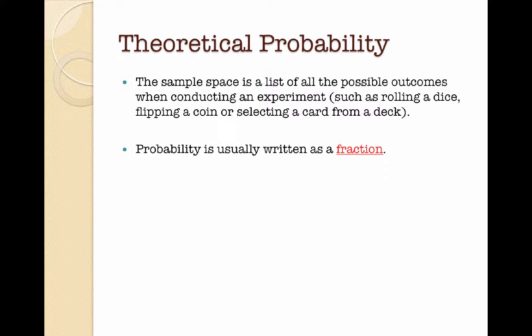Probability is usually written as a fraction, and I have 3 examples here in front of you. This represents the probability of rolling a 3, which is 1 out of 6. This is the probability of flipping a head, which is 1 out of 2. And this is the probability of selecting an ace, which is 4 out of 52. I'm going to show you how to get these fractions.